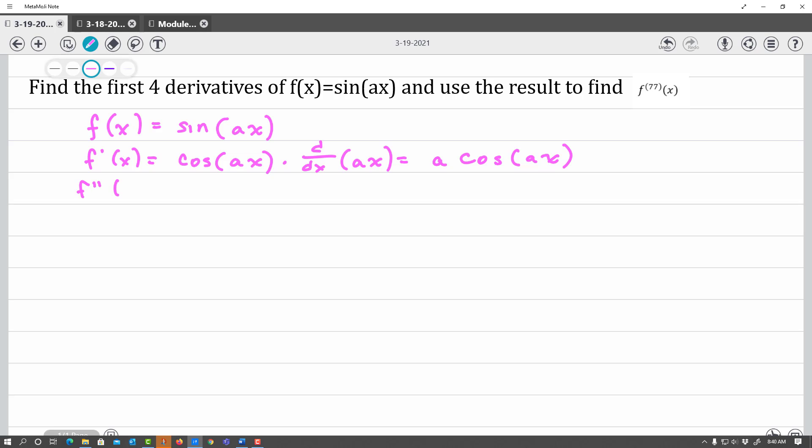For the second derivative, take the derivative again. The derivative of cosine is negative, so I have this a out front. The derivative of cosine is negative sine, so this is negative a sine ax times the derivative of the inside again. I get negative a squared sine of ax because I took that chain rule again.